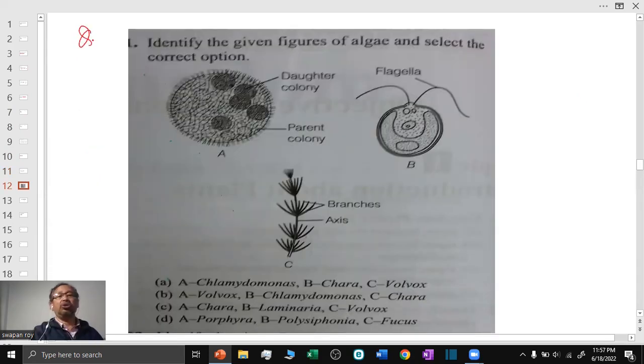Question number 12: Identify the given figure of algae and select the correct option. Here, 3 diagrams have been given and we have to select what are these: A, B, and C. The A diagram, A is the colonial algae, Volvox.